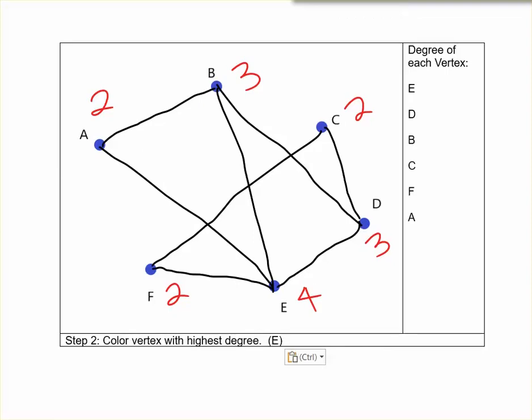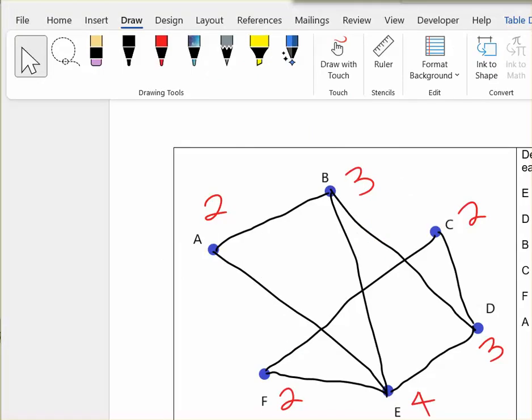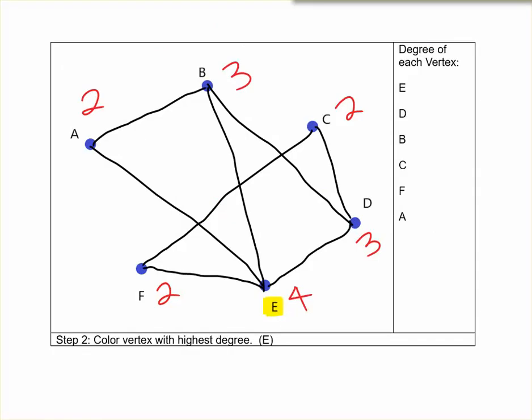Step 2 is to color the vertex with the highest degree. In this case that's E. So again we're going to use our draw tool in Word. For this I find it easy to use the highlighter. So select the highlighter and you can start with any color and go down and color vertex E. And I'm also just going to highlight the point E on my list so I know it's done.